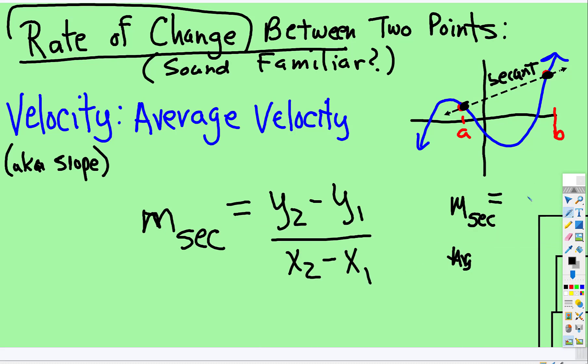So if you were to find the average velocity, you could write it like this. m subsecant line is equal to y2 minus y1 over x2 minus x1. Another way sometimes that you're going to see it written is the change in y's over the change in x's.